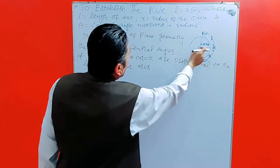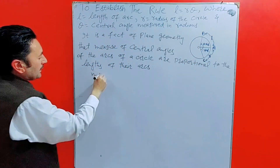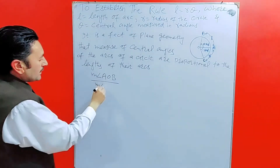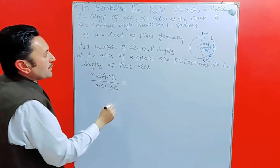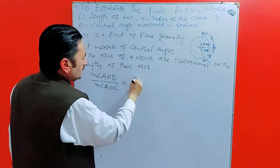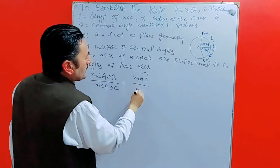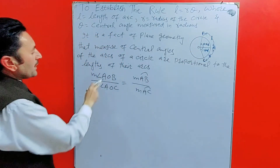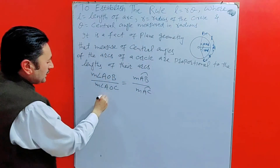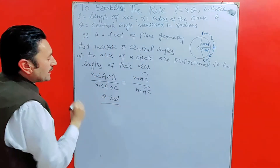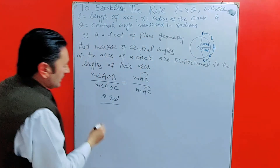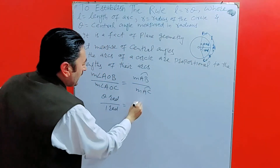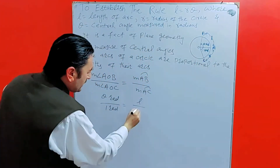تو ہم یہ central angle لیں گے: measure angle aob divided by measure angle aoc is equal to measure arc ab divided by measure arc ac. اب measure angle aob یہ theta radian ہے، so theta radians divided by — اور یہ جو measure angle aoc ہے یہ one radian ہے — divided by one radian is equal to measure arc ab۔ arc ab کی جو length ہے اس کو میں نے l سے represent کیا ہے اور arc ac کو میں نے r سے represent کیا ہے۔